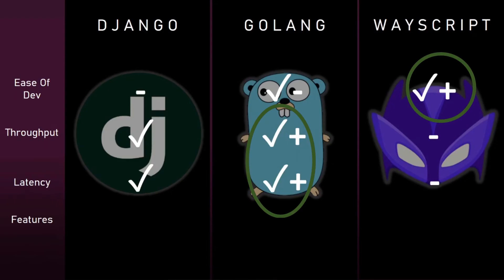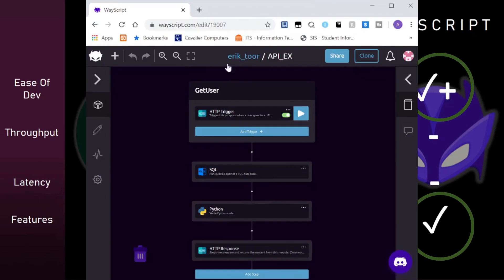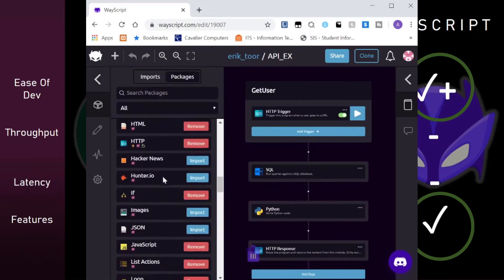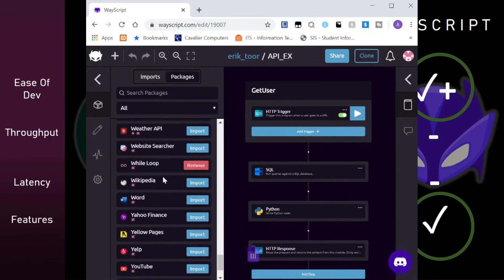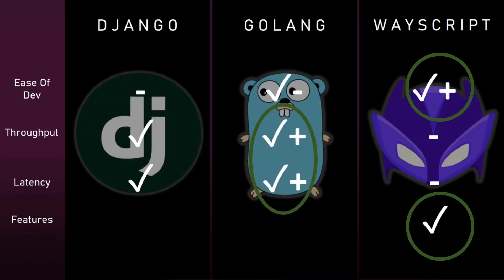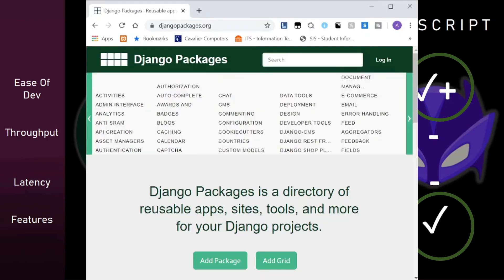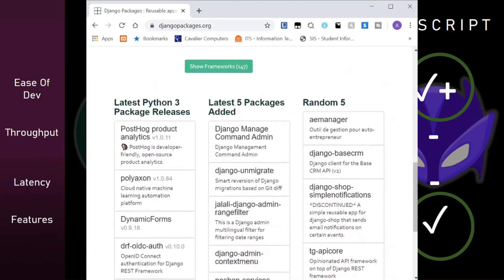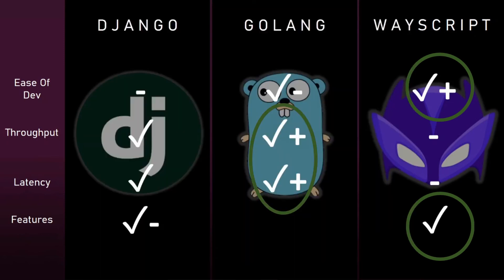Lastly, I want to discuss each API's compatibility with other features. The one with the most compatibility is WayScript — the platform makes it really easy to plug in other features, with a lot of modules you can just drag and drop in. Django also is a really well-known web framework with a lot of modules built on top of it, so I'd give that second place. And then third place is Golang — it's relatively new and still developing its features and drivers.